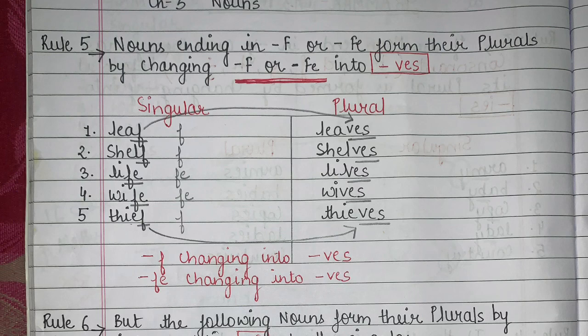Number 1: leaf. Can you see how I have to change leaf into plural? Leaf becomes leaves. See the pronunciation — leaf, leaves. We never say 'lifes'; it is leaves. Next: shelf becomes shelves. And life becomes lives. So you can see I have F and FE towards the end.